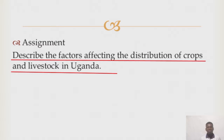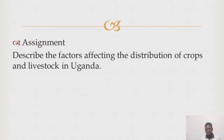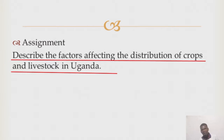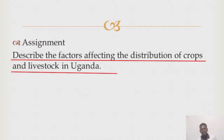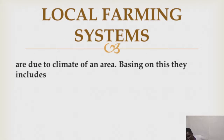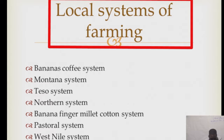Those are some factors affecting the distribution of livestock in East Africa. The question is always: describe the factors affecting the distribution of livestock and crops in East Africa — or they may ask specifically about Uganda. We shall continue with local farming systems in Uganda. We have around seven local farming systems in Uganda.